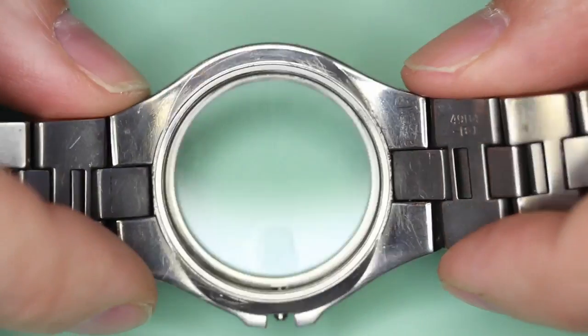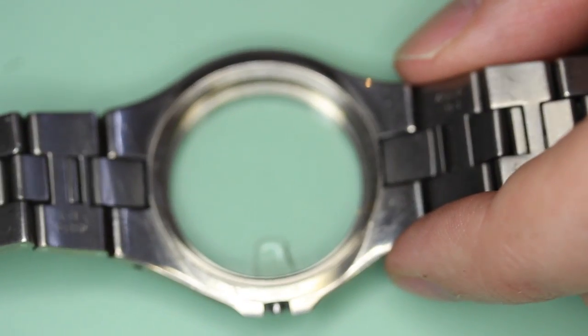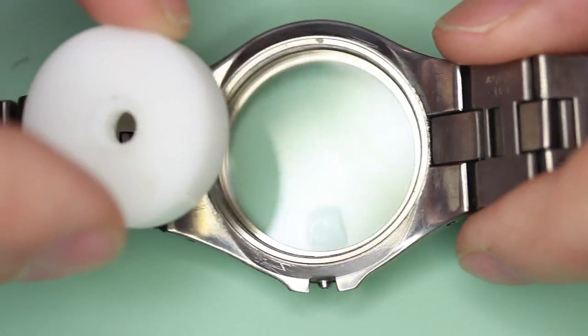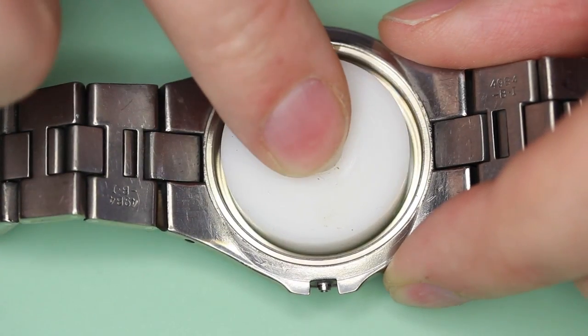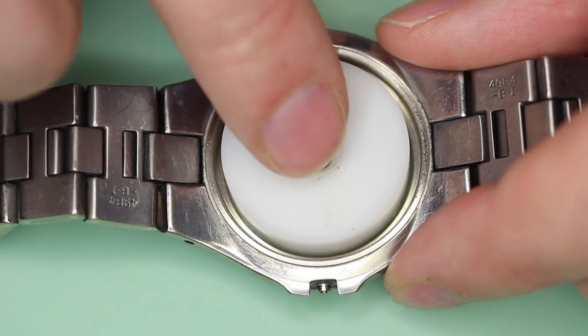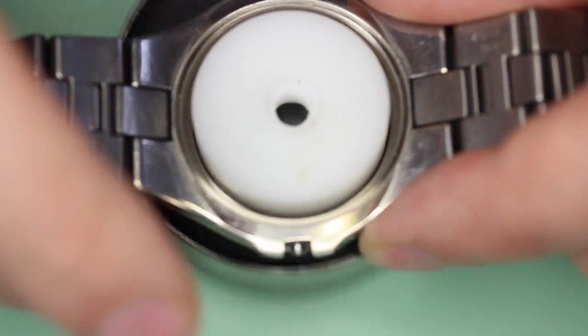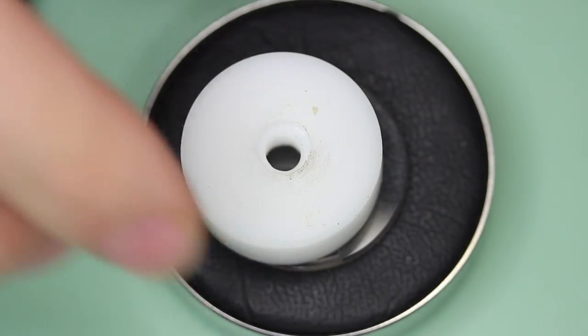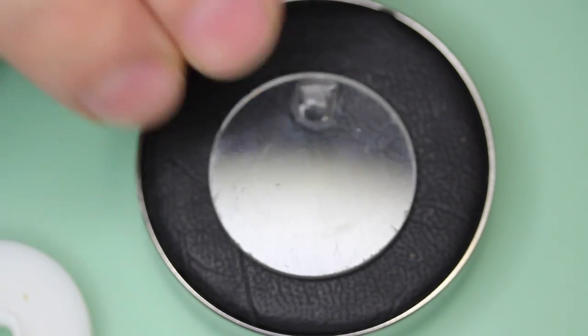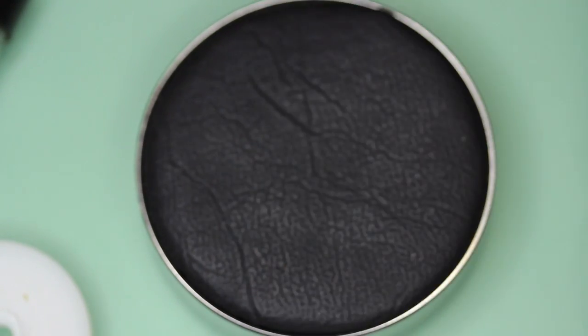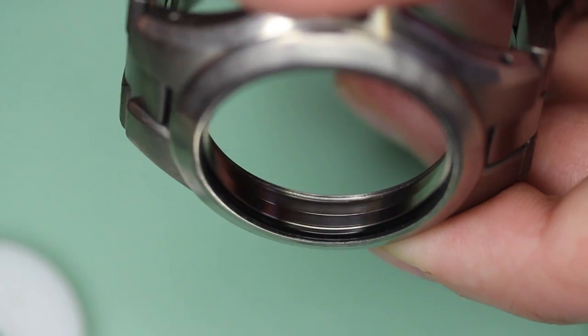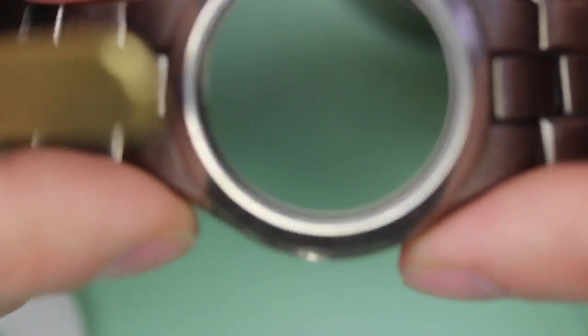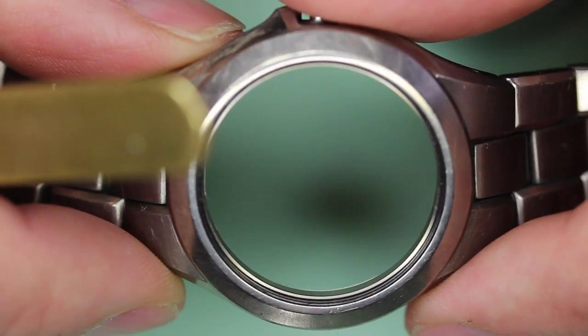Now we're going to use a die to knock out the original glass. For that, we're going to use a flat die that will come with the glass press, and we're going to use a hammer to knock it out. Notice there's a black nylon seal which is between the glass and the case. Be careful not to damage that.